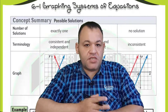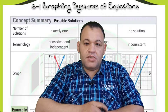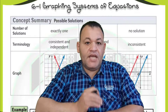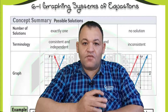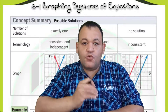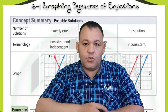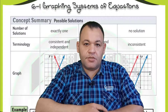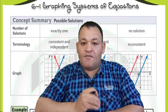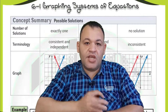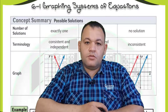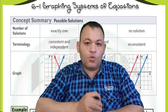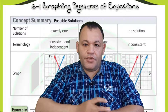First, what is the meaning of a system of equations? A system of equations is formed from more than one equation, and it depends on the number of variables. Suppose that we have two variables, x and y — to solve the system of equations, we need two equations. If you have three variables, it means you need three equations. Solving a system of equations means finding the value of the variables which satisfy the equations.